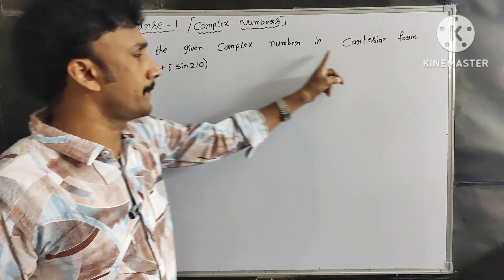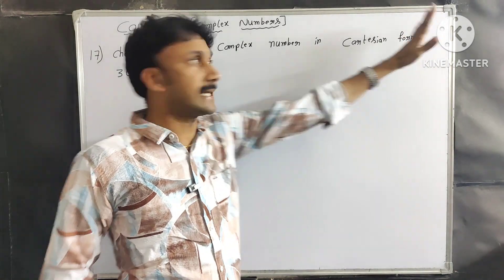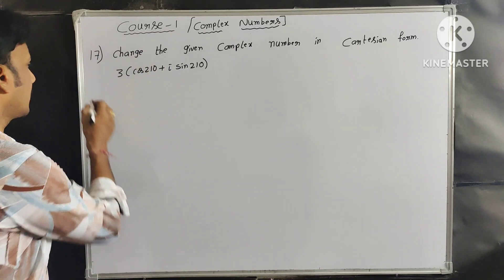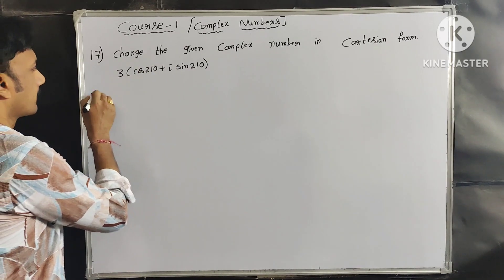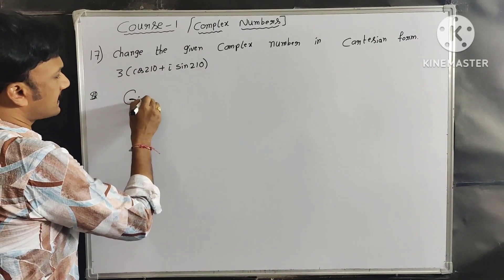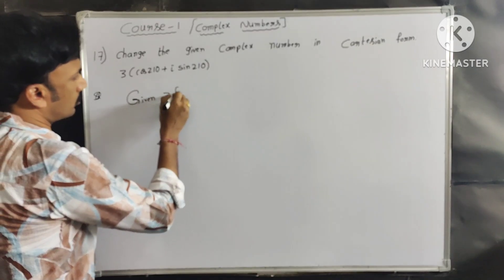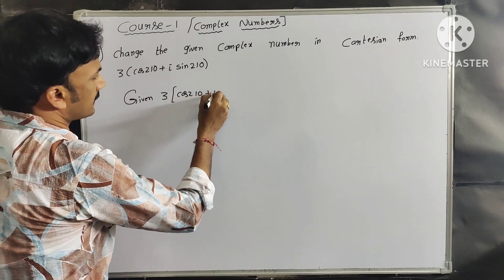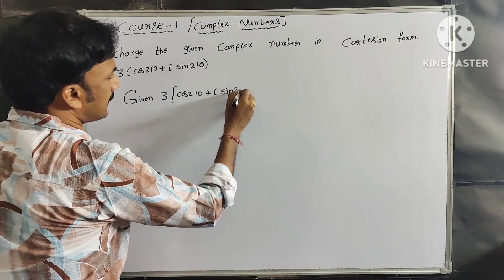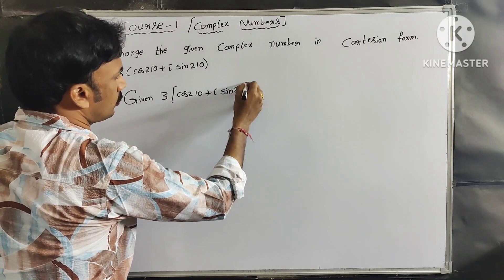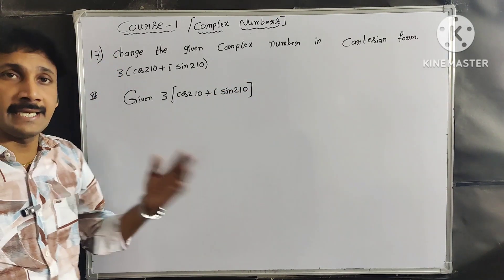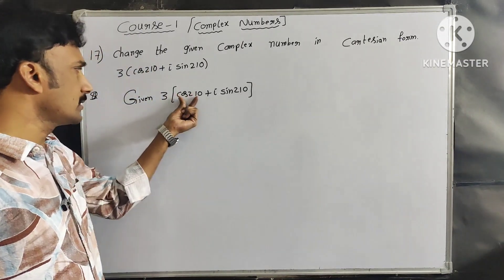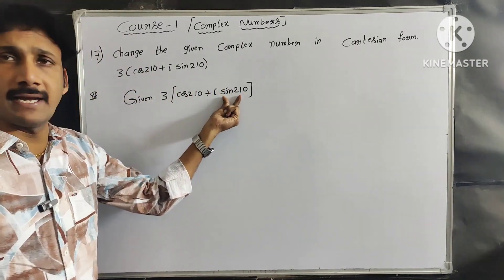Change the given complex number in Cartesian form. The complex number is 3(cos210° + i·sin210°). We need to convert it to the a + ib form.